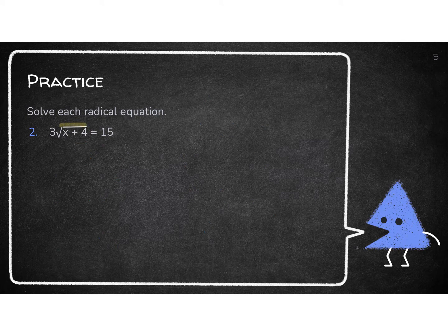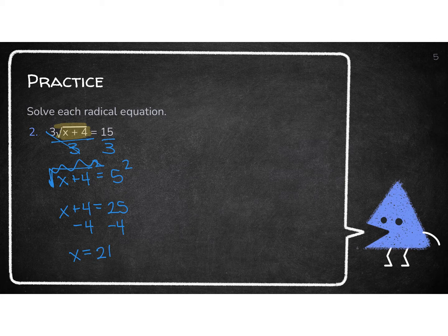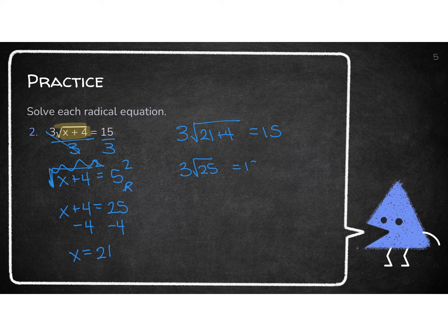Let's look at this one. I highlight the radical and everything underneath it. I need to get rid of that 3 on the outside — it's being multiplied by 3, so to undo multiplication, I divide. I'm left with the square root of x plus 4 equals 5. Since everything highlighted is alone, I square both sides and get x plus 4 equals 25. Subtracting 4 from both sides, x equals 21. I didn't square a negative number, so let's double check: 3 times the square root of 21 plus 4 — that's the square root of 25, which is 5, times 3 equals 15. Correct.